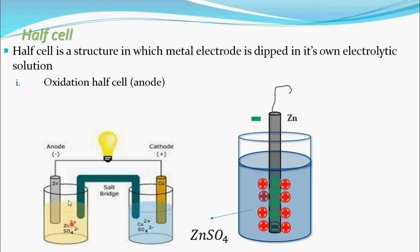Taking this half cell separately: a half cell is a structure in which a metal electrode is placed. Here, we have taken a beaker with zinc sulfate solution, and we are dipping a zinc rod in it. So, a half cell is a structure in which the metal electrode — in this case, the zinc electrode — is dipped in its own electrolytic solution, which is zinc sulfate solution. Such a structure is called a half cell.